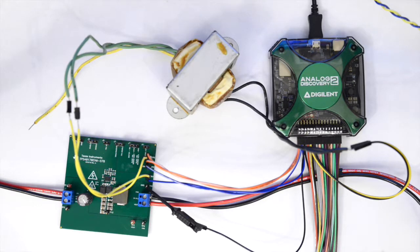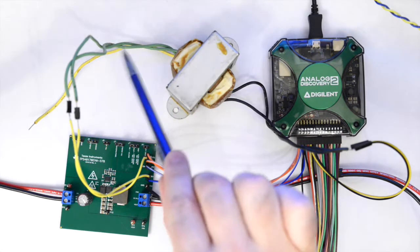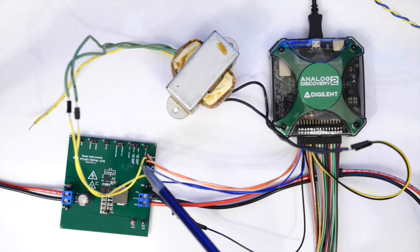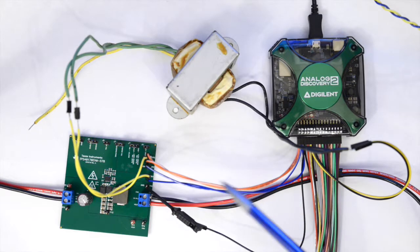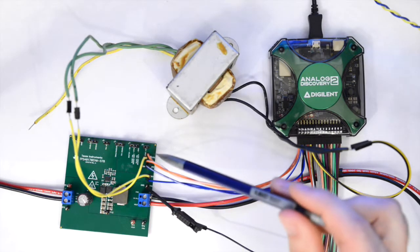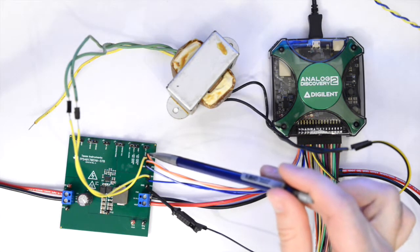I've connected the waveform output of the AD2 to the primary side of the transformer. The secondary side of the transformer is connected to the inserted resistor here. The channel 1 oscilloscope input, in orange, is connected to the feedback side of that inserted resistor and to ground.